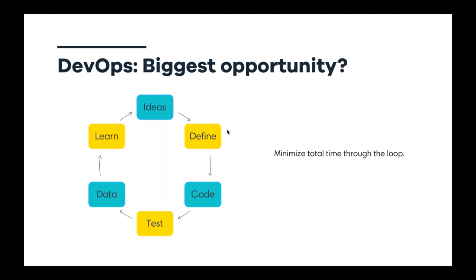The idea is to go as quickly as possible through this loop — starting from the idea, then coding a first prototype, testing it, seeing how users consume the feature, and based on data and user feedback, learning from that experiment and iterating. The speed of learning is key, as seen in the most successful companies. That's the framework we'll share today.